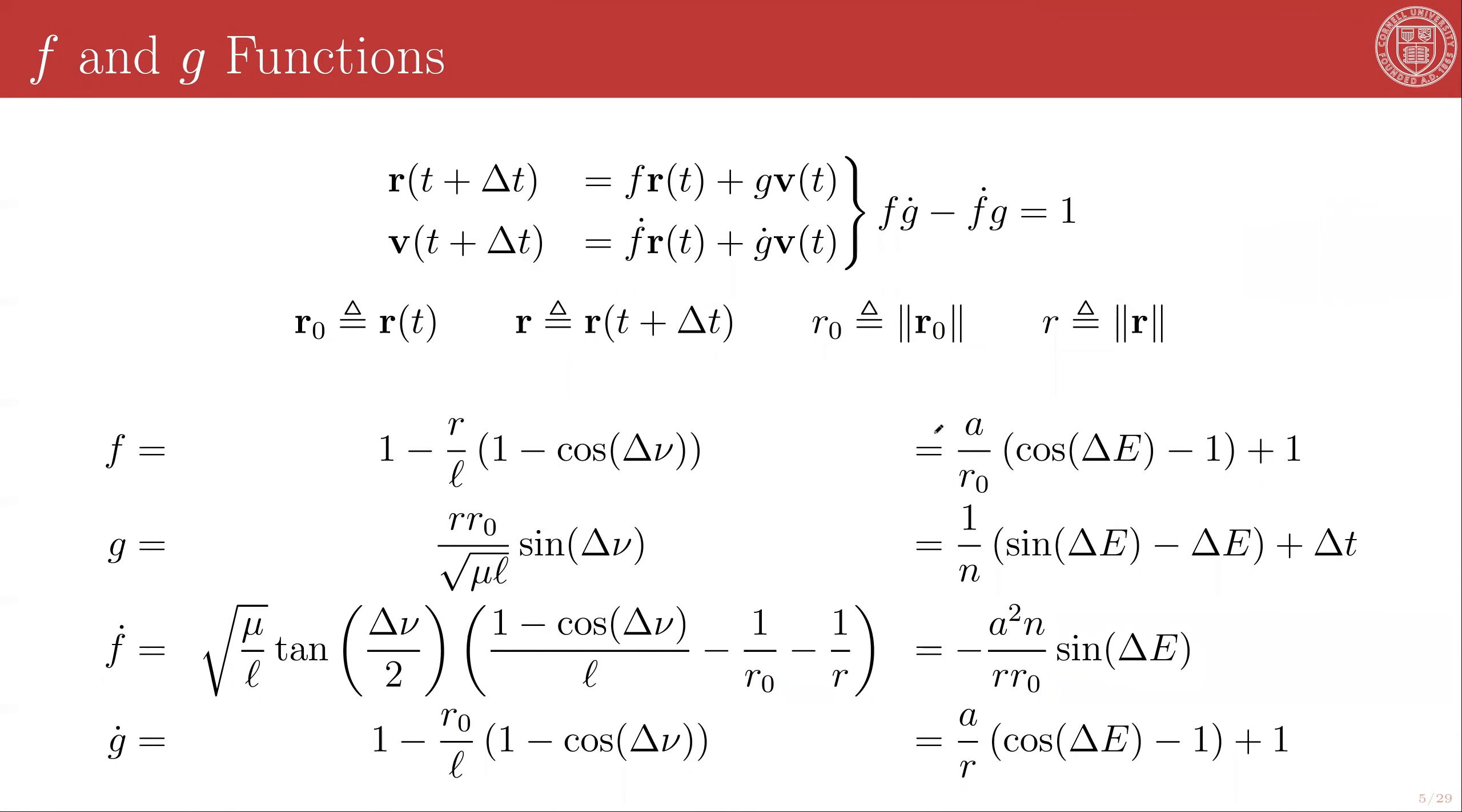And so here, just to make it this a little bit notationally simpler, we're defining R naught as the magnitude of the orbital radius vector at the initial time, so R naught is R of t, and R is the orbital radius vector magnitude at the final time, so R is R of t plus delta t.